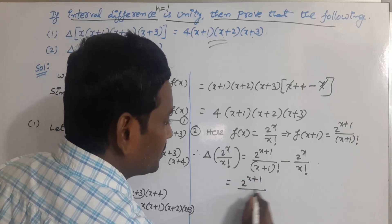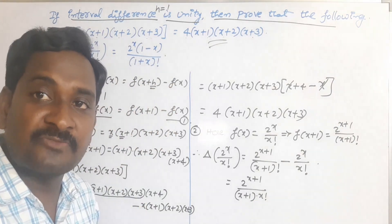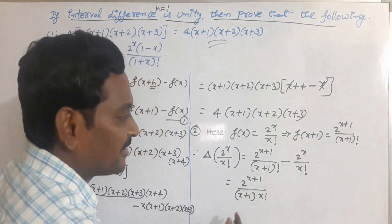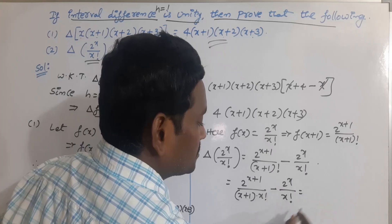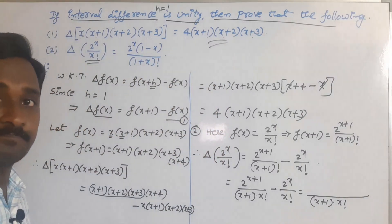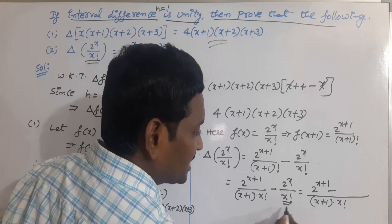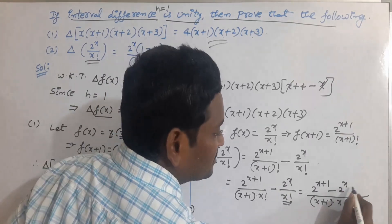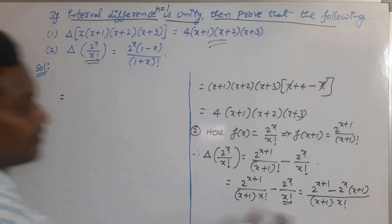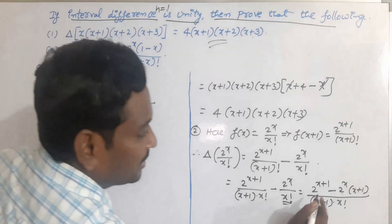Rewriting the first term, the denominator (x+1)! can be written as (x+1)·x!. So the expression becomes 2^(x+1) / [(x+1)·x!] minus 2^x / x!. Taking (x+1)·x! as the LCM, we multiply 2^x in the second term by (x+1).